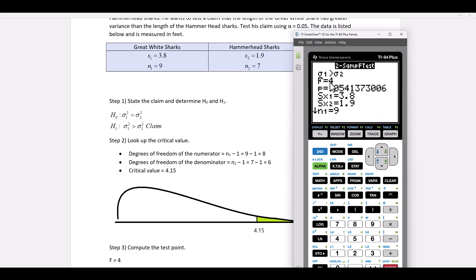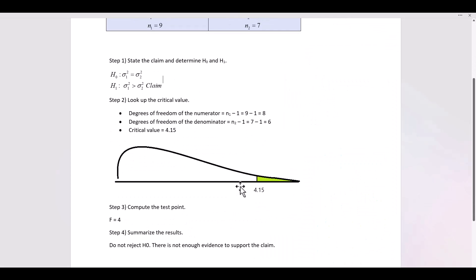And F is equal to 4. So the test point is 4. That's going to fall short of the critical region. So we do not reject H-naught. And we summarize by stating that there is not enough evidence to support the claim. Thanks for watching the video.